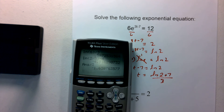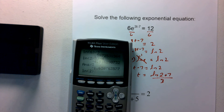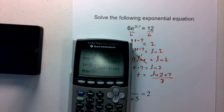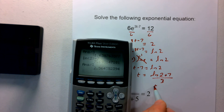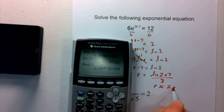In the calculator: natural log of 2, close parentheses, plus 7, hit enter, then divide by 3. That gives t is approximately 2.564.